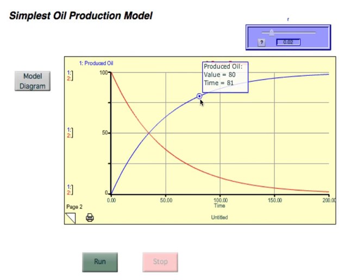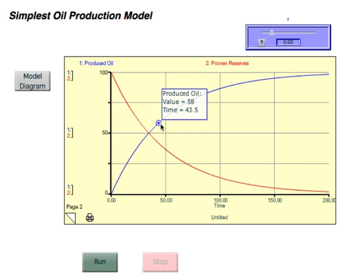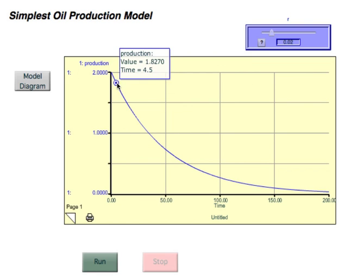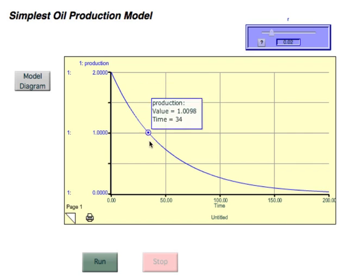As I move the cursor along here, those curves tell me the time and the value of produced oil. If I shift down here to proven reserves, it does the same thing for that parameter.